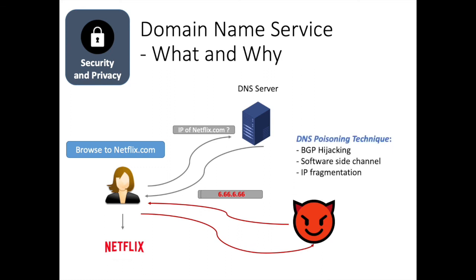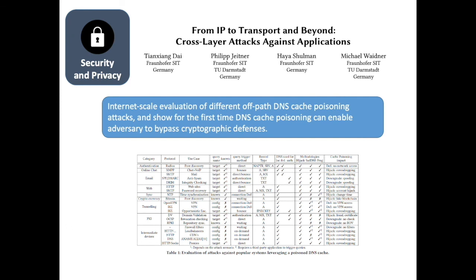In modern days, we mostly focus on off-path attacks because they have the least requirement in terms of attack power. Some of the latest developments in recent security conferences include BGP hijacking, software side channels, and IP fragmentation. In the last paper of the section, 'From IP to Transport and Beyond: Cross-Layer Attacks Against Applications,' Dai and others from Fraunhofer SIT launched an internet-scale evaluation of different off-path DNS cache poisoning attacks, showing for the first time that DNS cache poisoning can enable adversaries to bypass cryptographic defenses. The paper has many interesting details, and I encourage you to attend the talk and read the paper. With that, enjoy the conference and see you virtually.